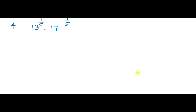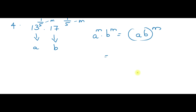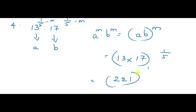Fourth question: 13 raise to 1 by 5 into 17 raise to 1 by 5. Here A is 13, B is 17, and M is common, that is 1 by 5. So you can write it as A raise to M into B raise to M equals AB raise to M, which is 13 into 17 raise to 1 by 5. Solving 13 into 17 gives 221 raise to 1 by 5. Hope you have understood this video.